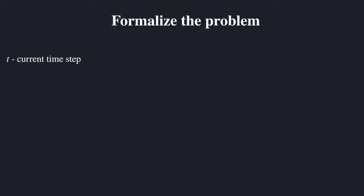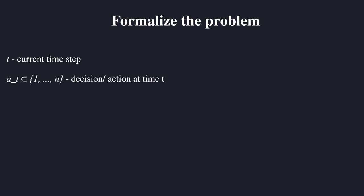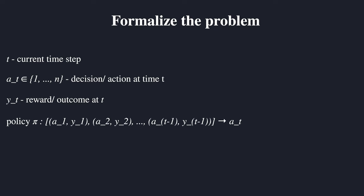T here is always the current time step, which is discrete. So imagine a time axis where T is one, then T is two, and so on. At time step T we can make a decision, or in other terms take an action A_T. In the multi-armed bandit case, this action is choosing one of the N machines — so A_T would be between one and N, like the number of machines we have. And Y_T is then the reward we get at time step T.